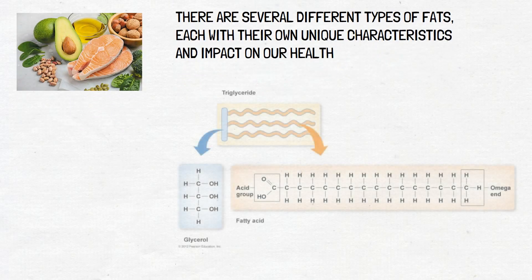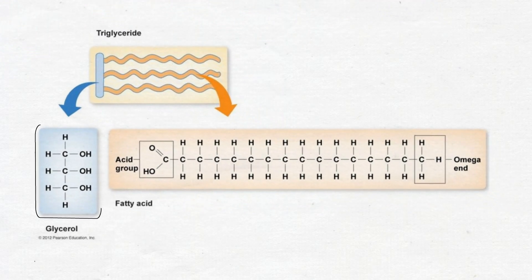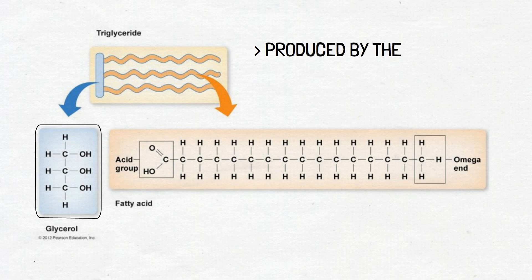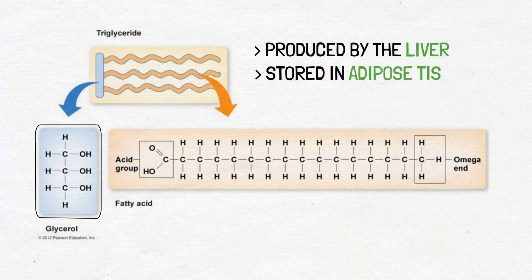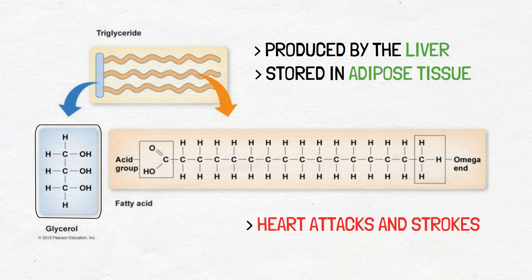The first type of fats we will discuss are triglycerides. Triglycerides are composed of three fatty acid molecules, which are long chains of carbon atoms surrounded by hydrogen atoms, plus one glycerol molecule, a three-carbon alcohol. Triglycerides are a type of fat molecule found in the blood that are used by the body for energy. They are produced by the liver and come from the foods we eat.